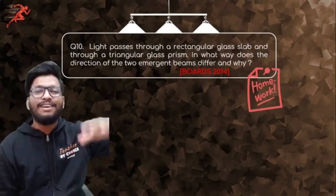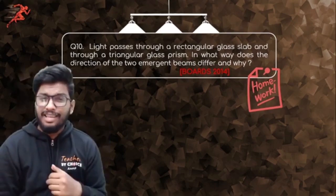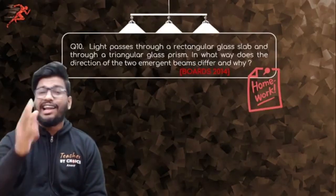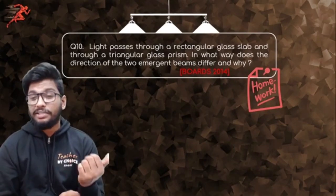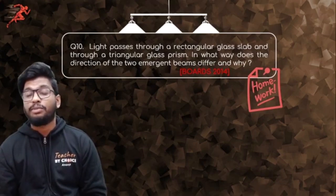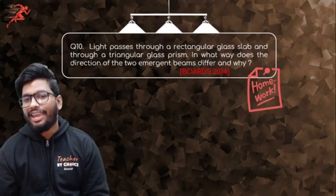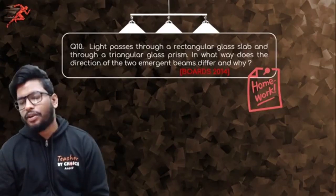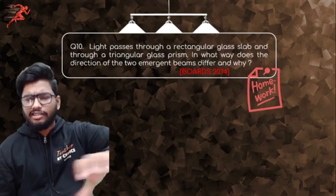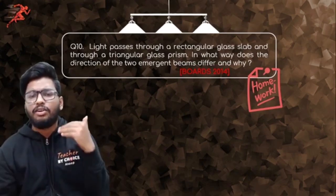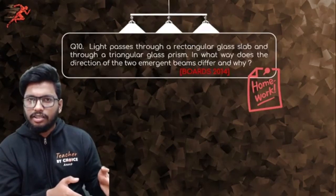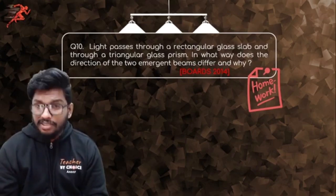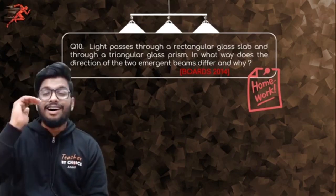The very first question is actually a homework question from the last session on refraction of light through a plane surface. The question was: light passes through a rectangular glass slab and through a triangular glass prism - in what way does the direction of the two emerging beams differ, and why do they differ? This was a 2014 board exam question.